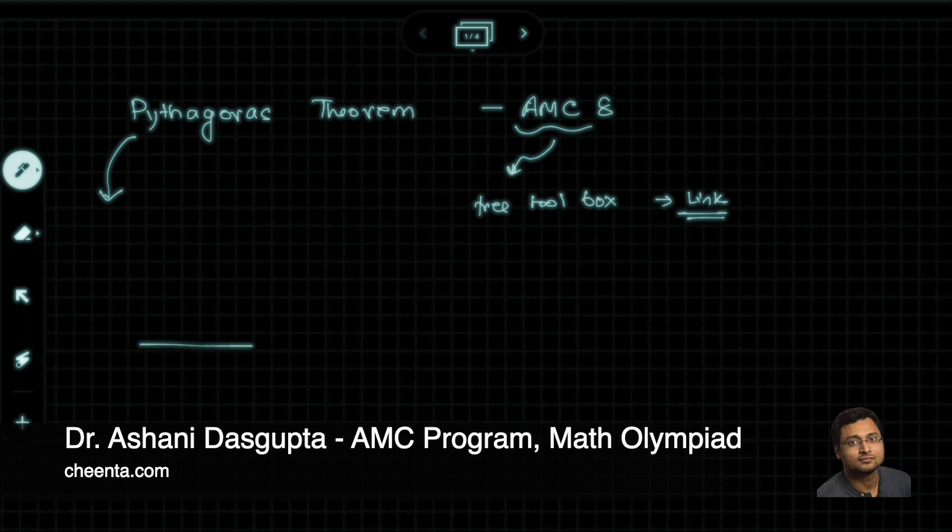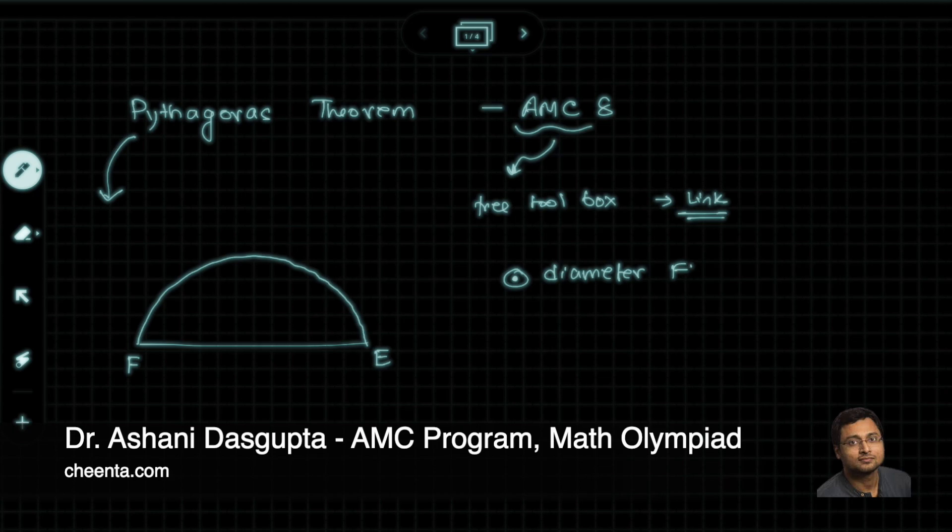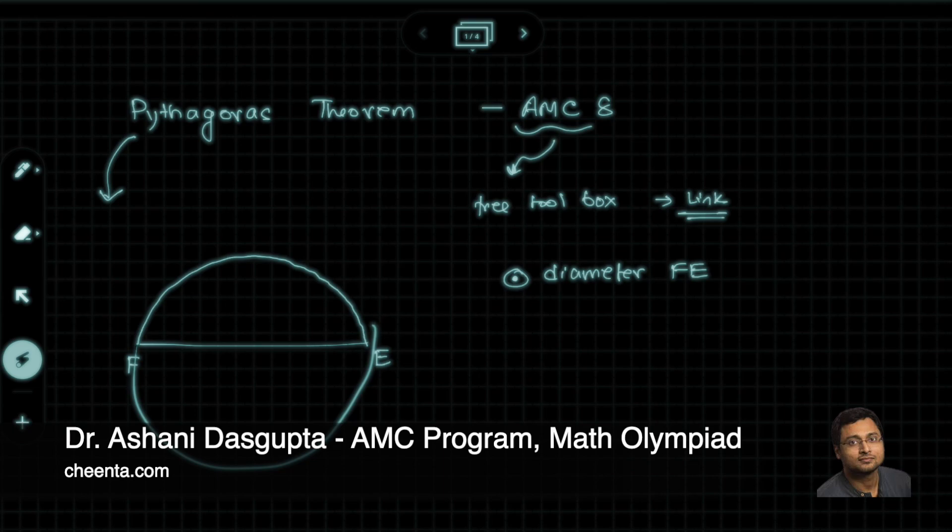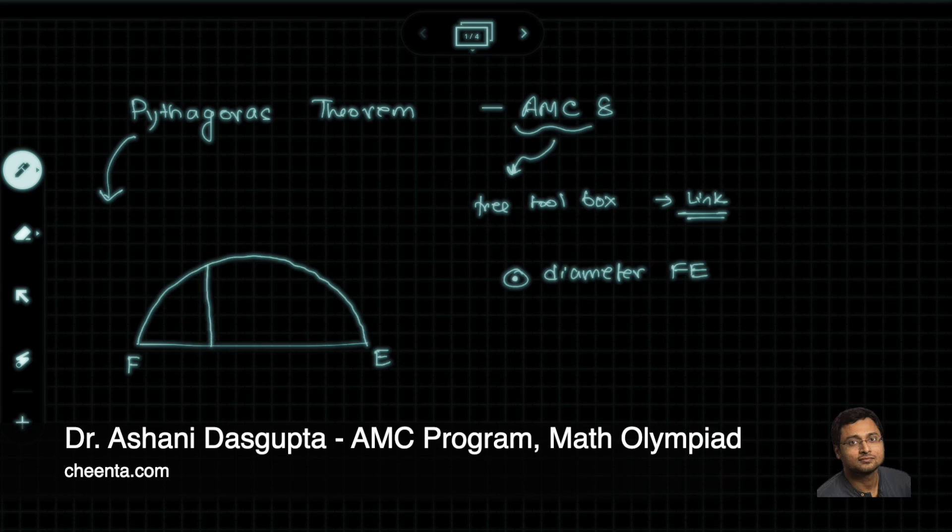The problem says that we have a semicircle like this with diameter FE. So that's the first point to remember - diameter FE. So it's not just any chord, it's the diameter of the circle if you complete the circle. We draw a rectangle like this, which is A, B, C, and D.